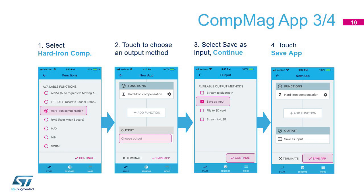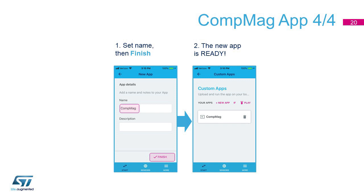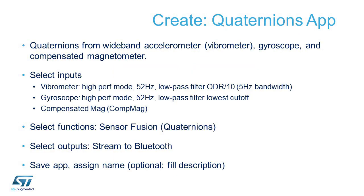Let's create a composed input for the rest of the example by selecting Save as Input on the Output screen. Let's save the app and name it CompMag. Now let's compute the Quaternions — the four numbers expressing the absolute orientation of an object in 3D space. To do this, we need to use the accelerometer, the gyroscope, and the magnetometer.